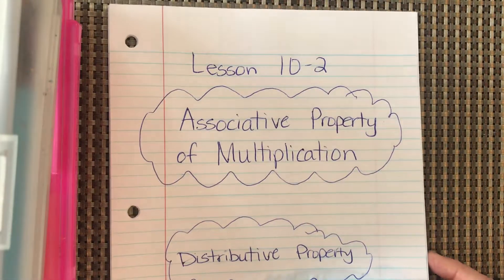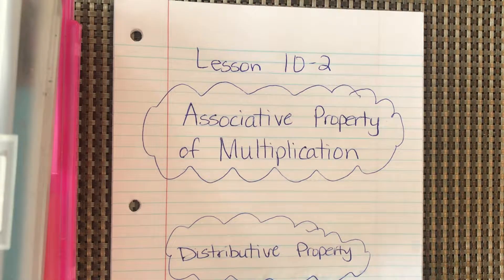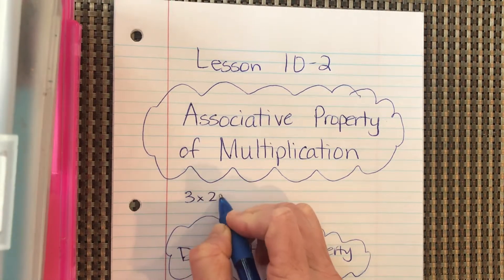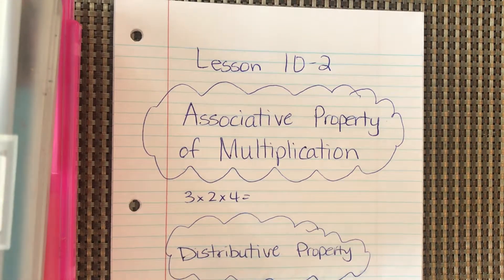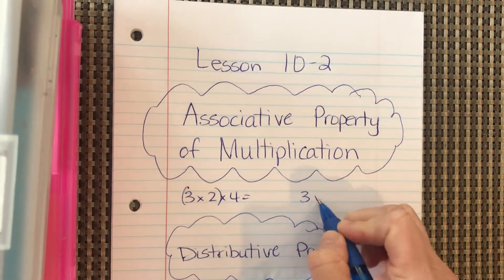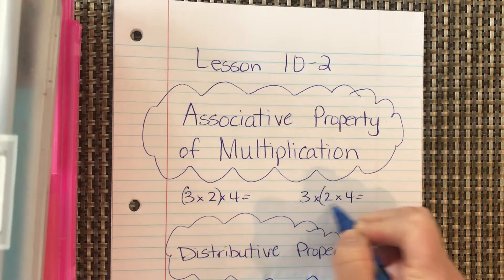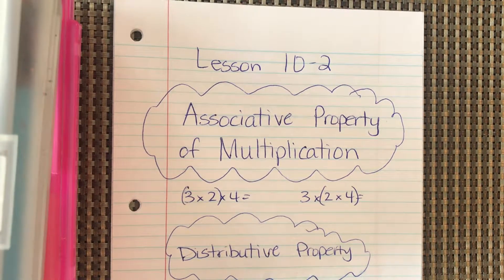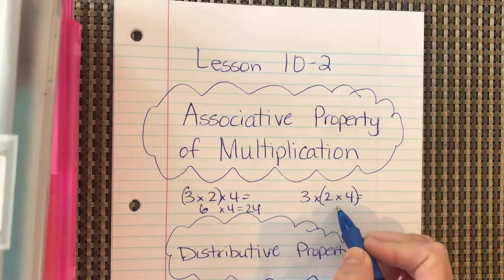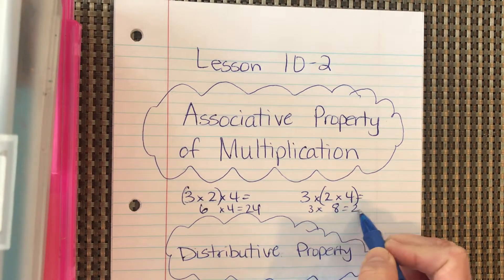Today we're going to do lesson 10-2, which covers the associative property of multiplication and the distributive property. The associative property means if I have 3 times 2 times 4, I can either multiply 3 times 2 first, or multiply 2 times 4 first, and I'll get the same answer. So 3 times 2 is 6 times 4, which is 24, and 2 times 4 is 8 times 3, which also equals 24.